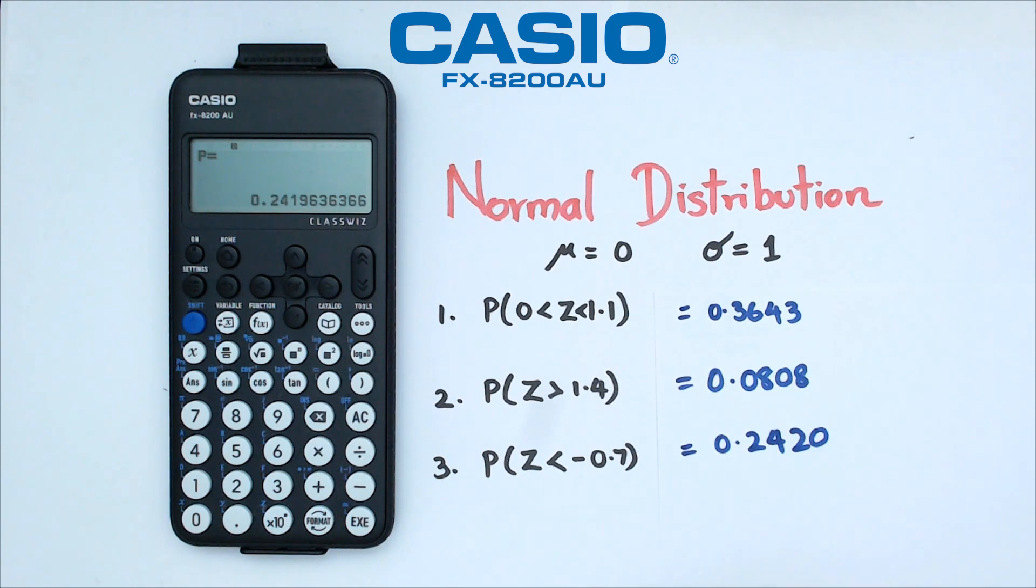Now I know that with normal distribution, it is generally good practice to have four decimal places for your probabilities. And folks, that's pretty much how you do normal distribution on this particular Casio FX8200 AU calculator.